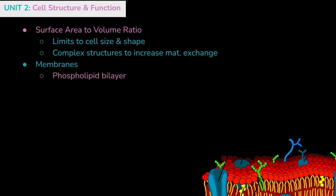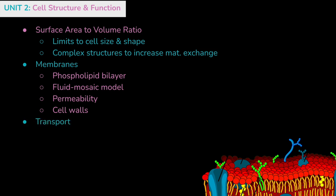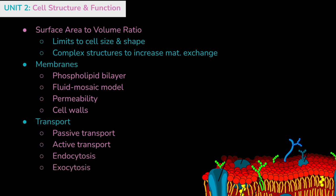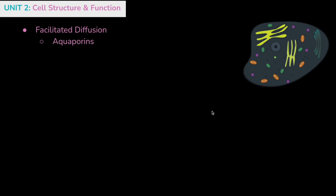Membranes are also featured in this unit. Make sure you're familiar with the structure of the phospholipid bilayer and how it forms a fluid mosaic model as the barrier between the cell's internal and external environment. This is a semi-permeable membrane, so review which types of molecules can pass through easily without support of different proteins, and which types of cells have cell walls. This unit also includes passive transport, active transport — which requires ATP — and endocytosis and exocytosis for removal or intake of larger molecules via vesicles. Facilitated diffusion is covered deeply, including aquaporins, ion channels, and the sodium-potassium ATPase, which helps with membrane potential.